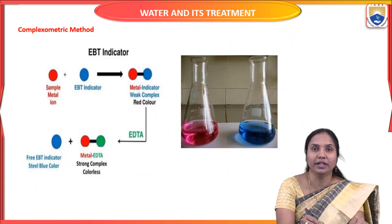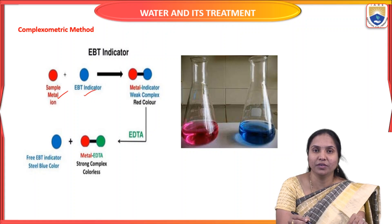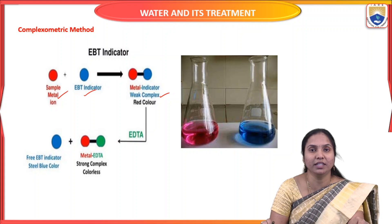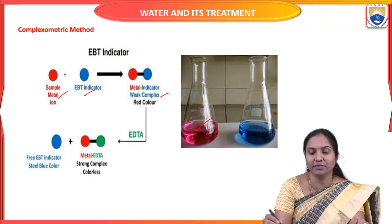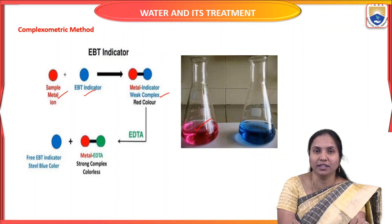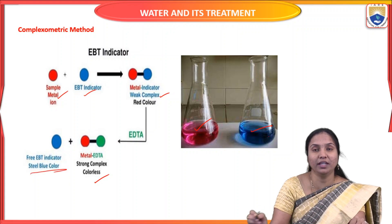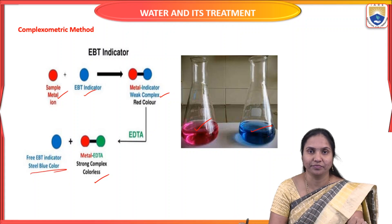A diagram shows: the hard water contains sample metal ions (e.g., Calcium, Magnesium). Adding EBT indicator forms a Metal-Indicator complex — wine red in color. When titrated with EDTA, it forms Metal-EDTA stable complexes, which are colorless. The color changes from wine red to blue, where blue indicates free EBT indicator. This is the principle of the EDTA method.